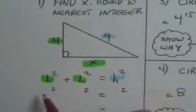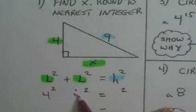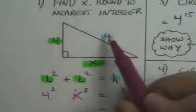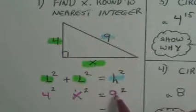So this leg is four, so it's four squared. This leg, I don't know, it's x. So it's x squared. And the hypotenuse is nine, so it's nine squared.